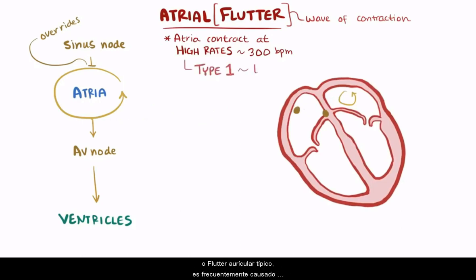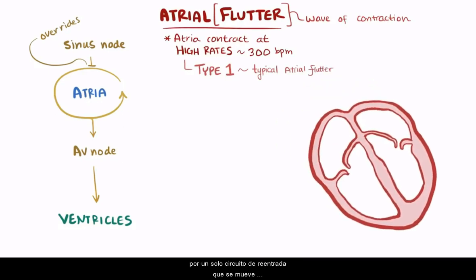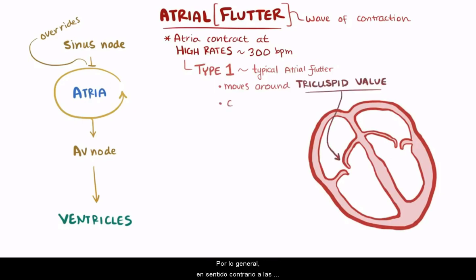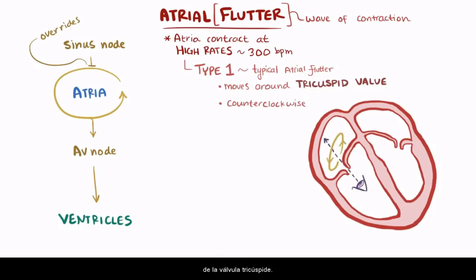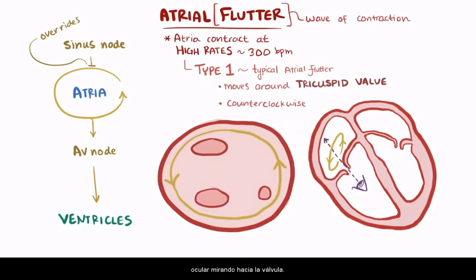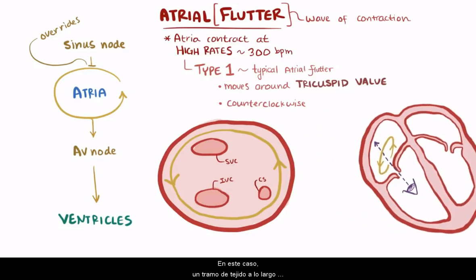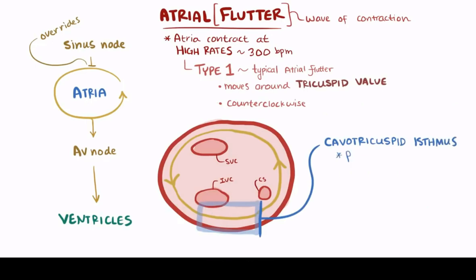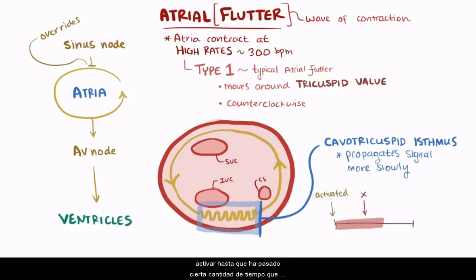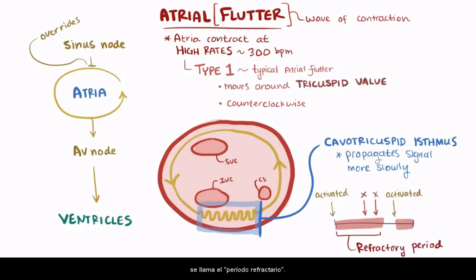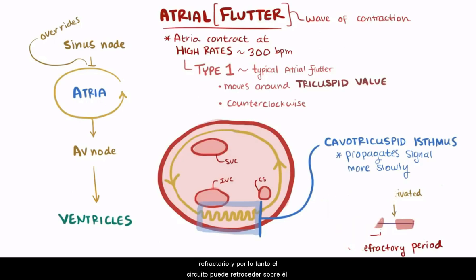There are actually two types. Type 1, or typical atrial flutter, is more common and is caused by a single reentrant circuit that moves around the annulus — or the ring of the tricuspid valve of the right atrium — usually in a counterclockwise direction when viewed looking up through the tricuspid valve. Imagine you're an eyeball looking up through the valve. You'll see the superior vena cava (SVC), the inferior vena cava (IVC), and the coronary sinus (CS). A stretch of tissue called the cavotricuspid isthmus propagates the signal more slowly than surrounding tissue. Tissue that was just activated can't be activated again until a certain amount of time has passed — called the refractory period — so that slow propagation through the isthmus gives the tissue enough time to exit the refractory state, and therefore the circuit can loop back on itself.